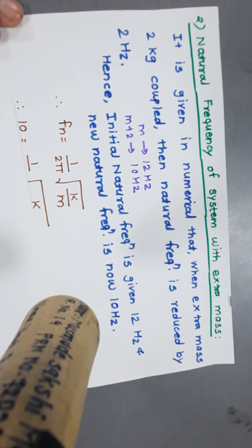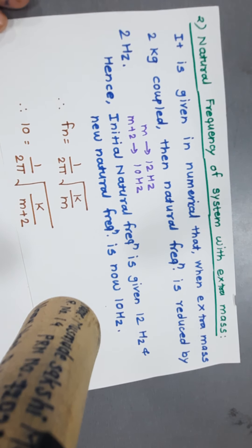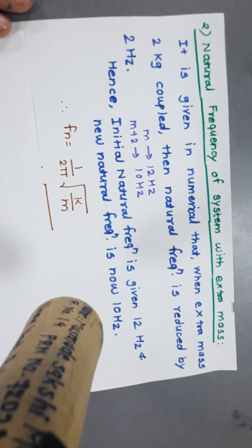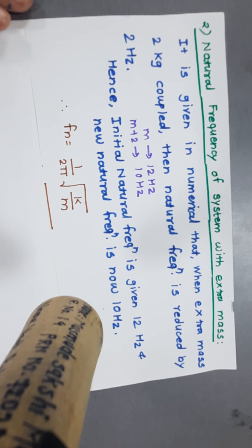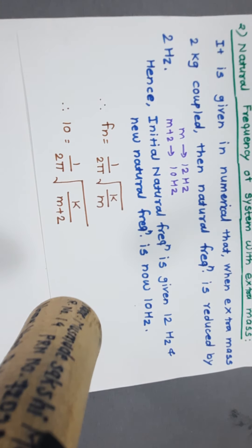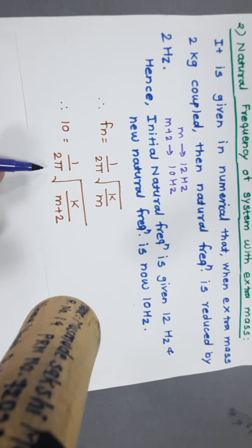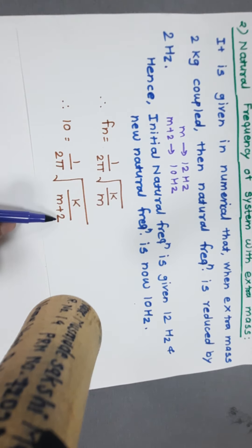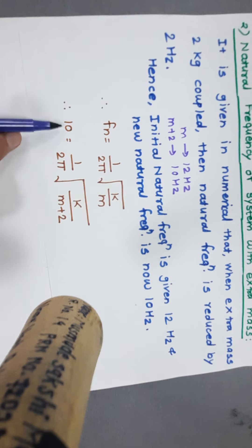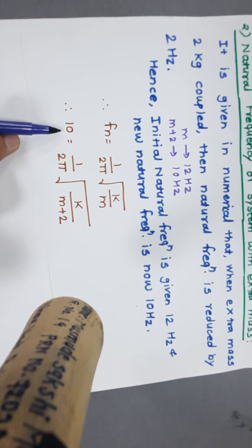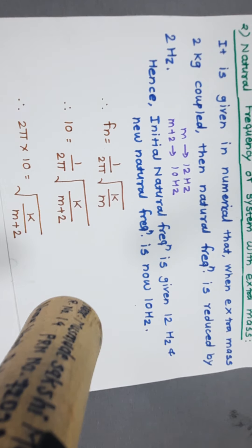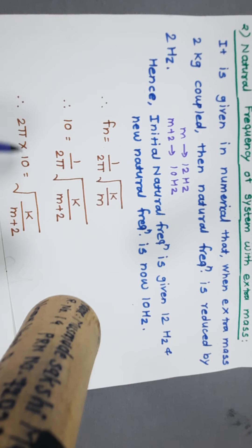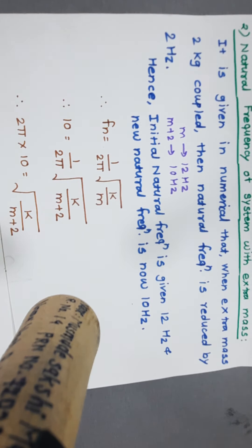The initial natural frequency is 12 Hz, and it reduces by 2 Hz due to coupling of the 2 kg mass, giving a new natural frequency of 10 Hz. Using the formula Fn = (1 / 2π) × √(k/m), the new natural frequency is: 10 = (1 / 2π) × √(k / (m + 2)). Rearranging, 2π × 10 = √(k / (m + 2)).